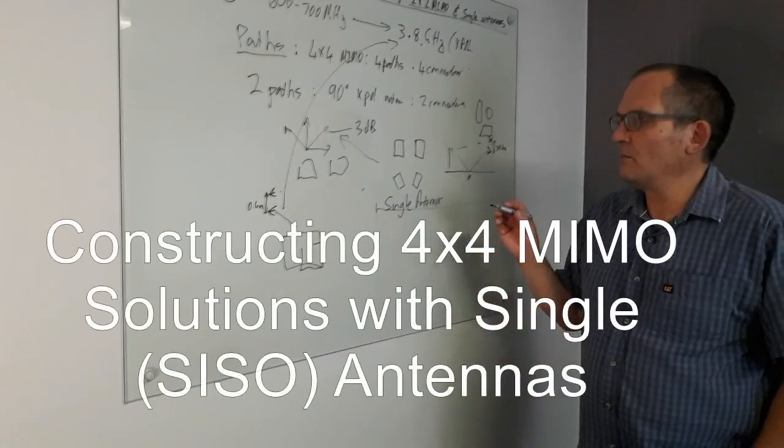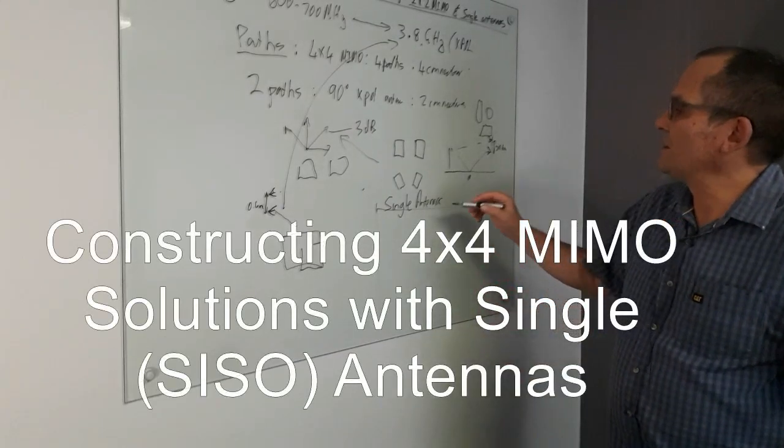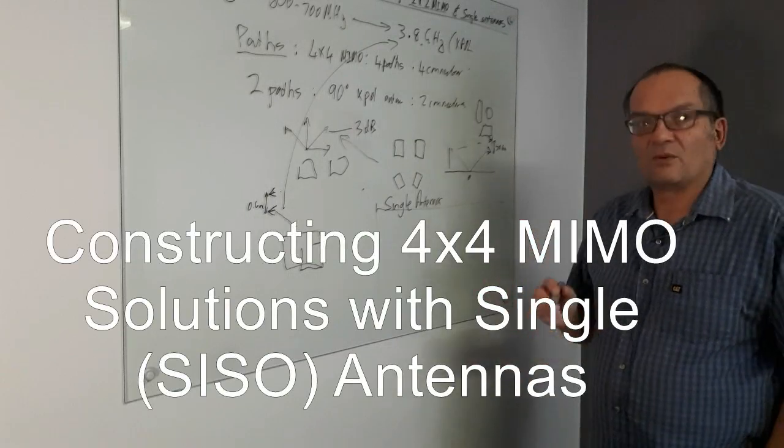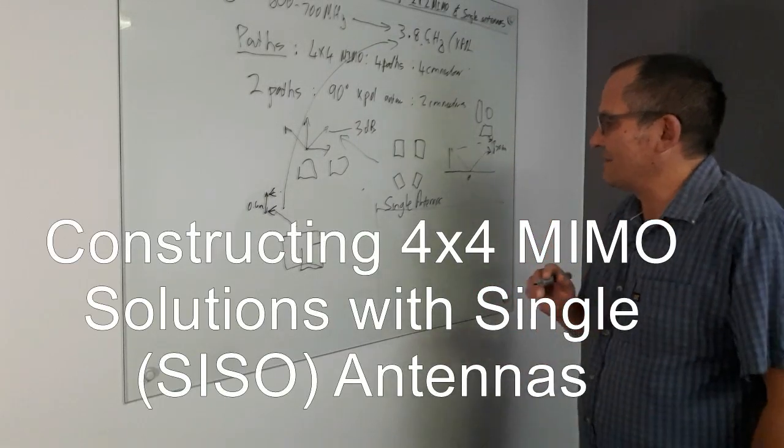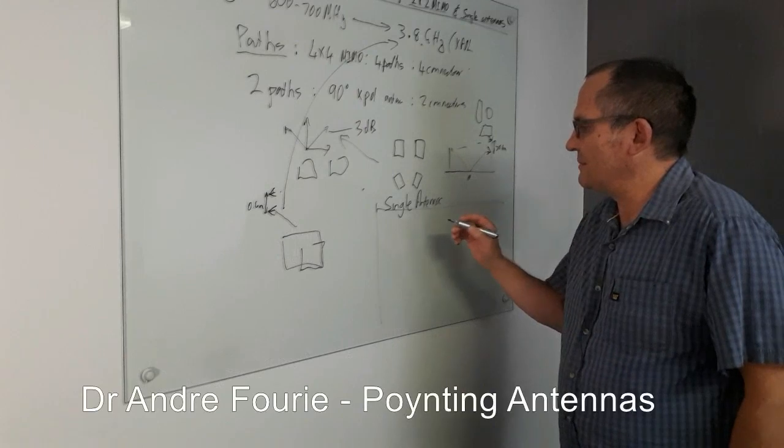One can also use single antennas to do 4x4 MIMO systems. Once again, they need to meet the frequency requirement, just importantly. So you can't just go use the type of antennas that we use for different types of frequencies.